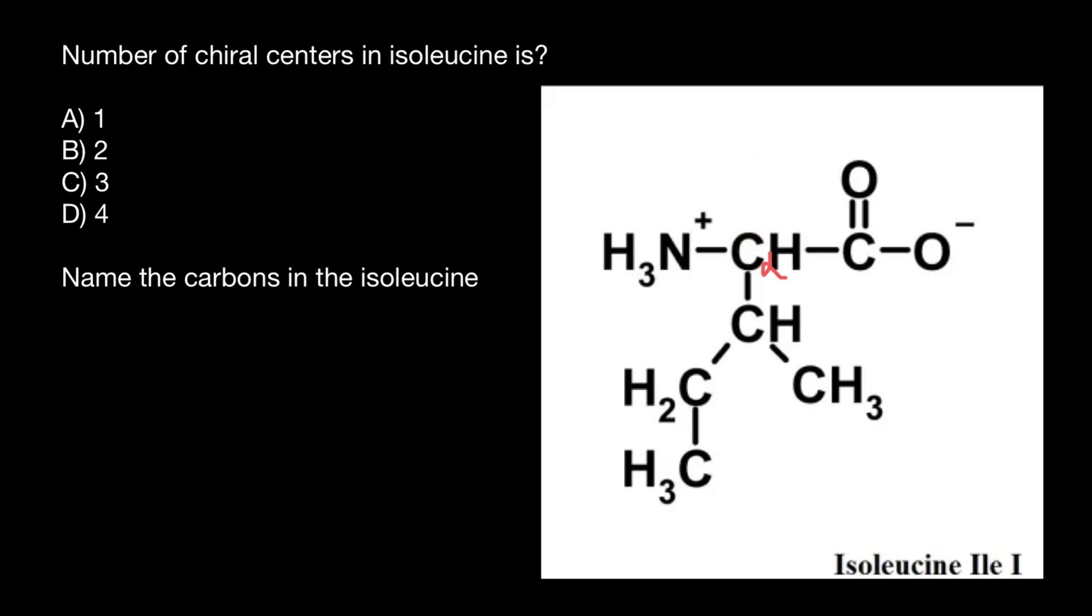So hydrogen can be here. It is attached to the carboxylic acid group, and the fourth would be to the carbon and hydrogen group here. So all these four groups are different, so we say that this carbon is chiral.